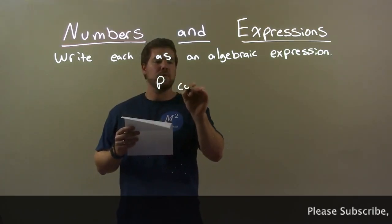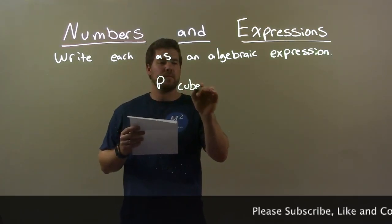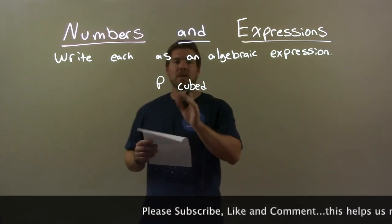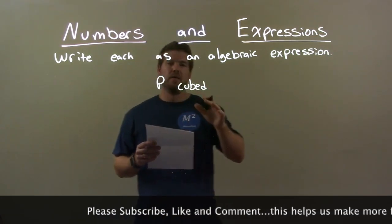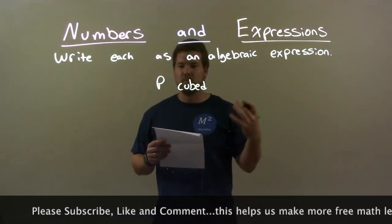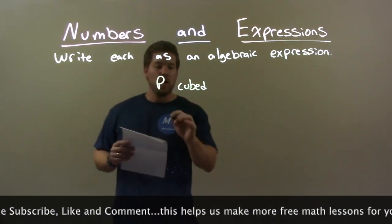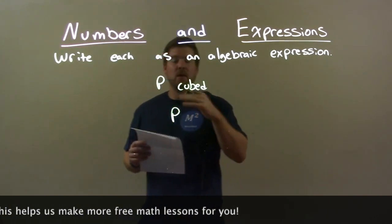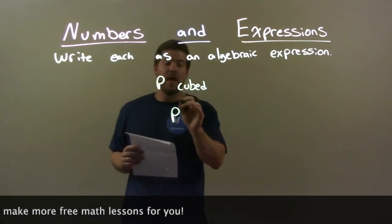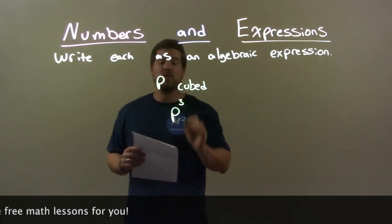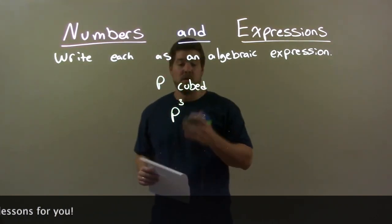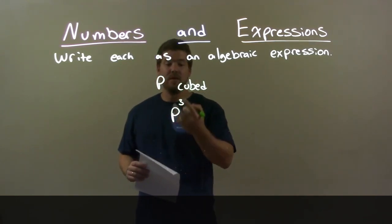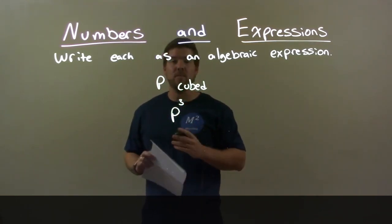P cubed. So I want to write P cubed as an algebraic expression. We start with P — that's the variable — and then cubed is the exponent to the third power. Our final answer is P to the third power.